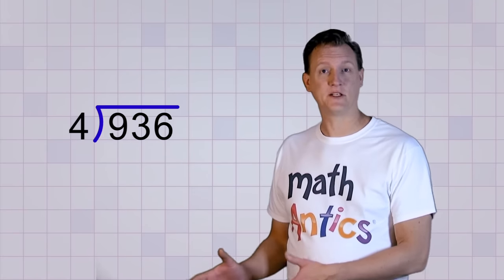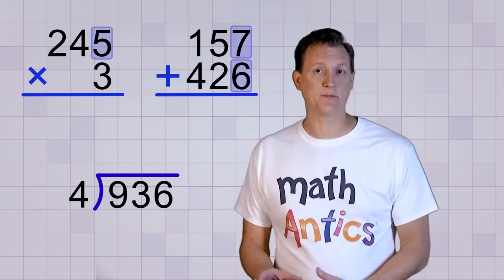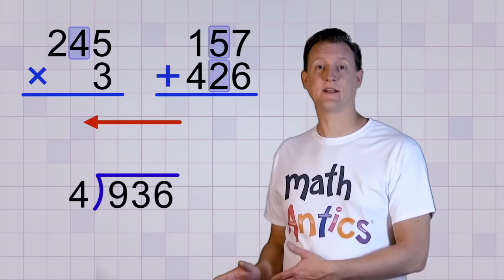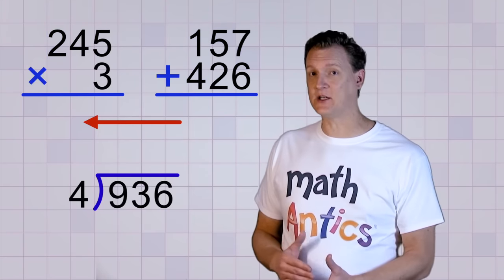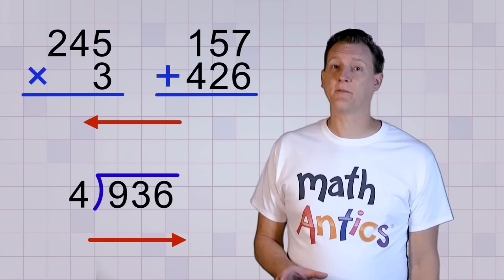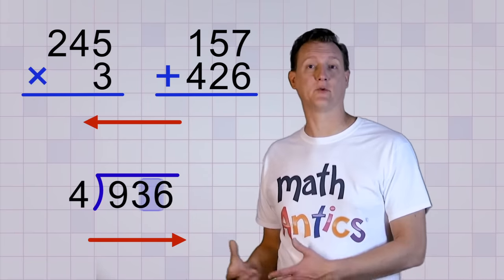Do you remember how with multi-digit multiplication and addition, we always start with the smallest digit, the ones place digit, and we work from right to left? Well, division is backwards. We still go digit by digit, but the other way. We start by trying to divide up the digit in the biggest number place first, and we work our way from left to right.